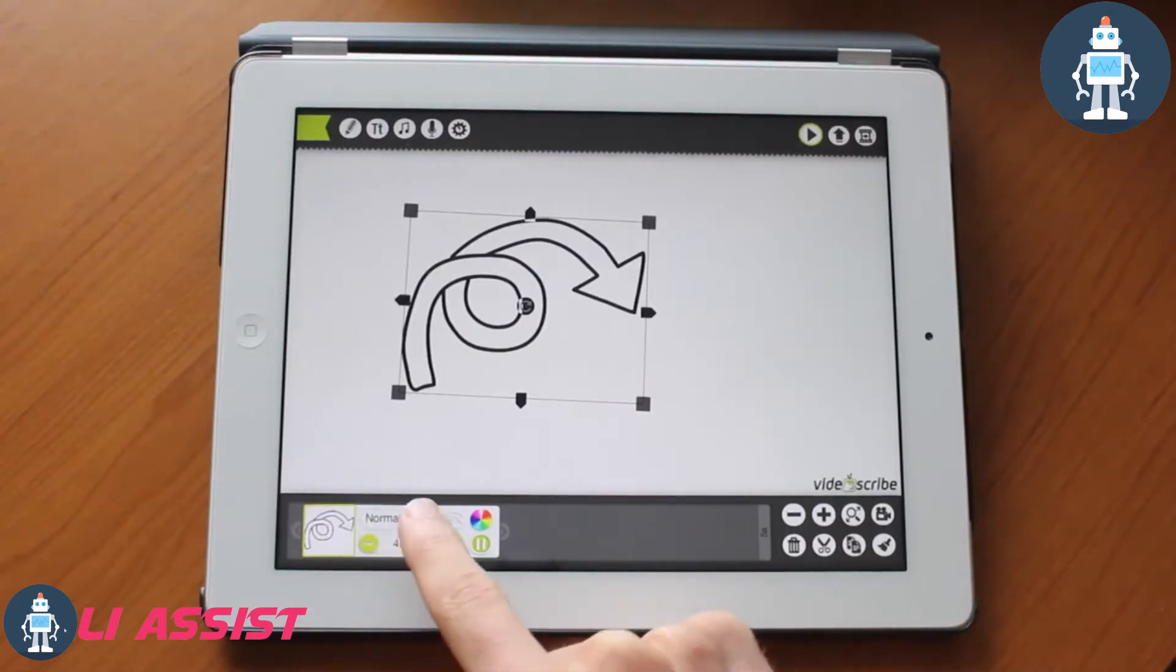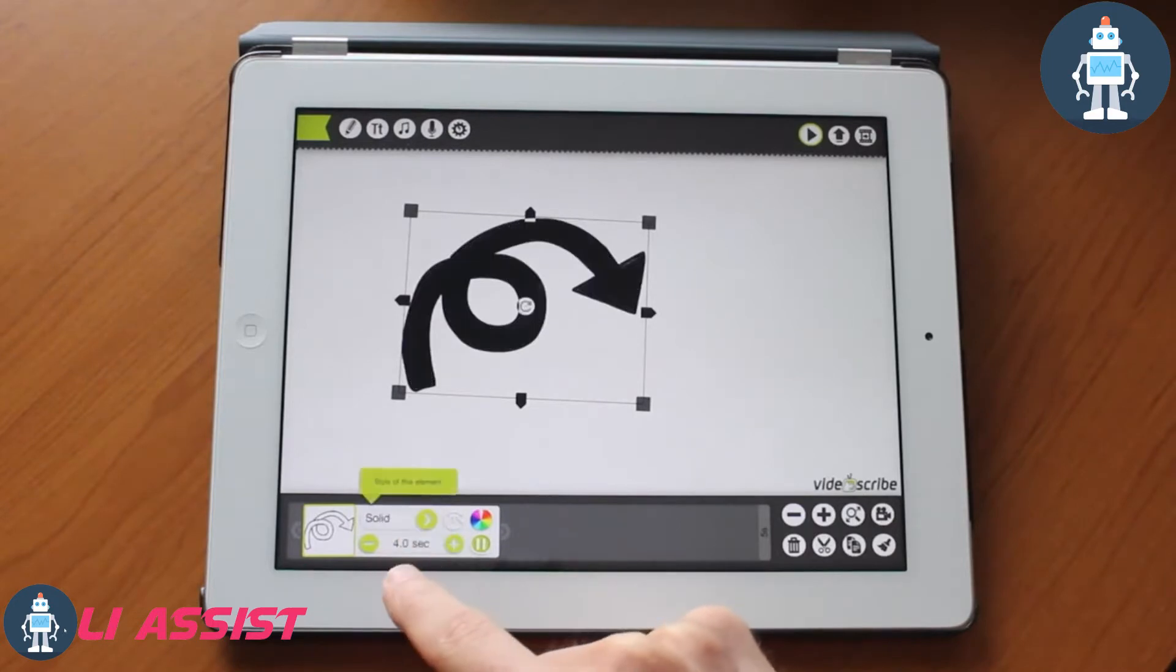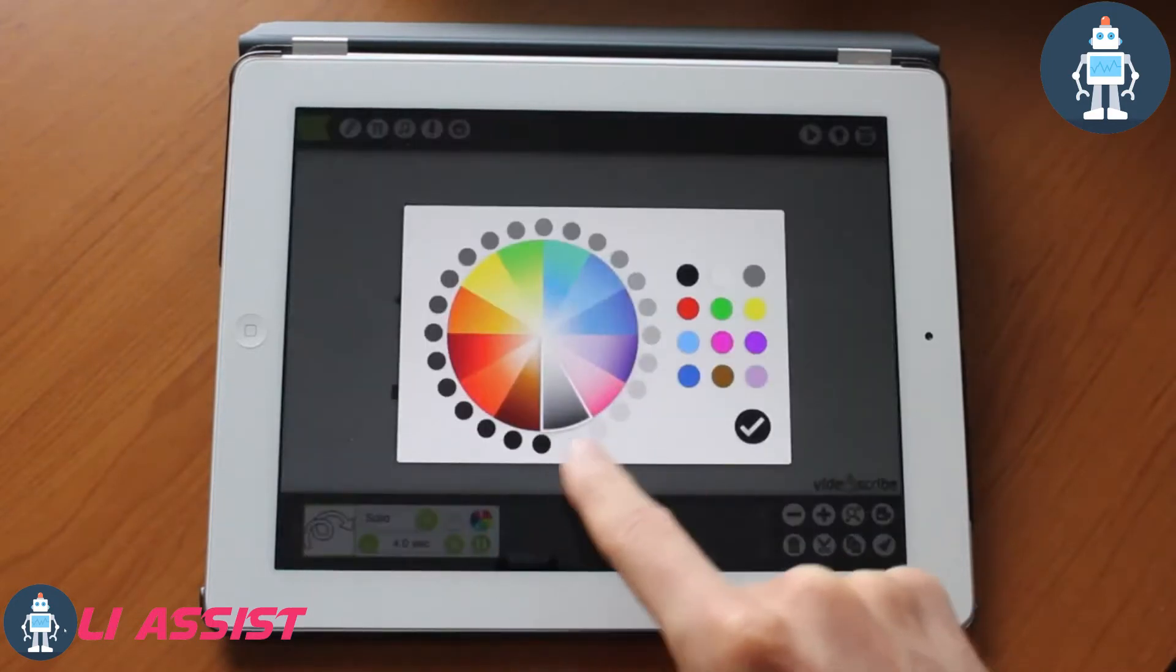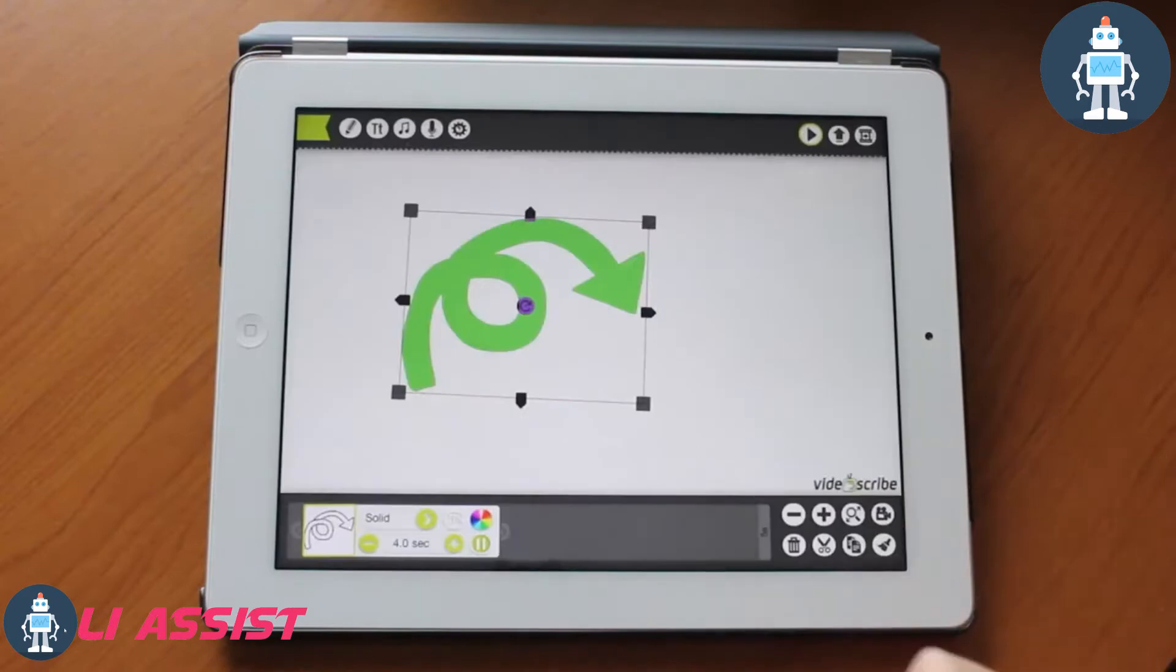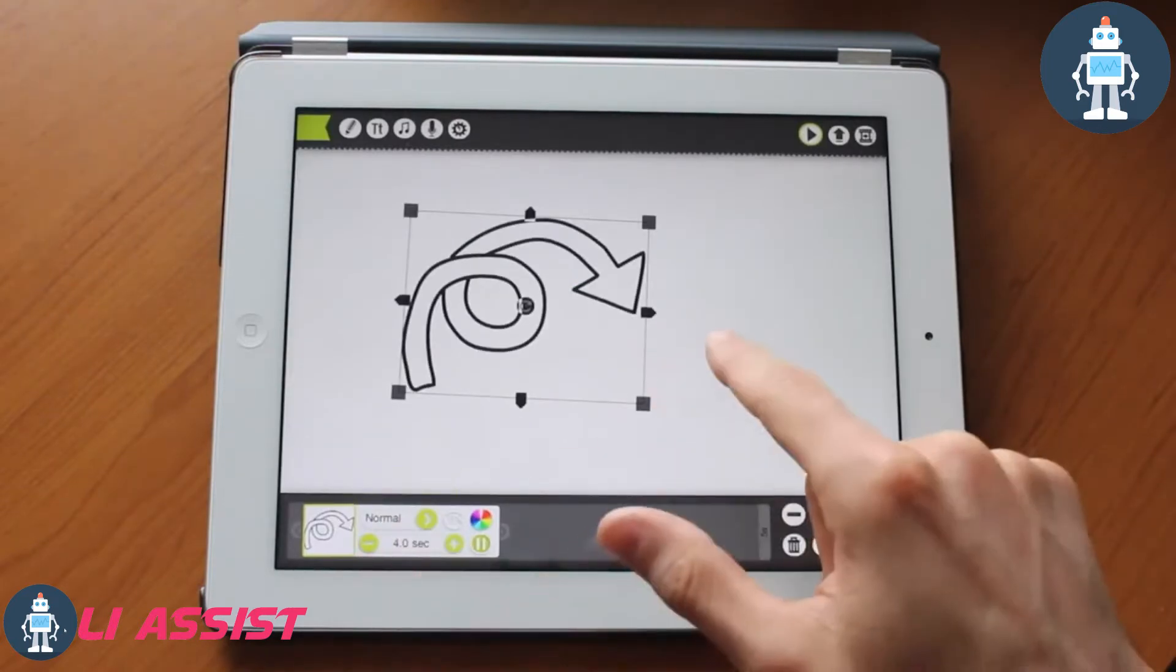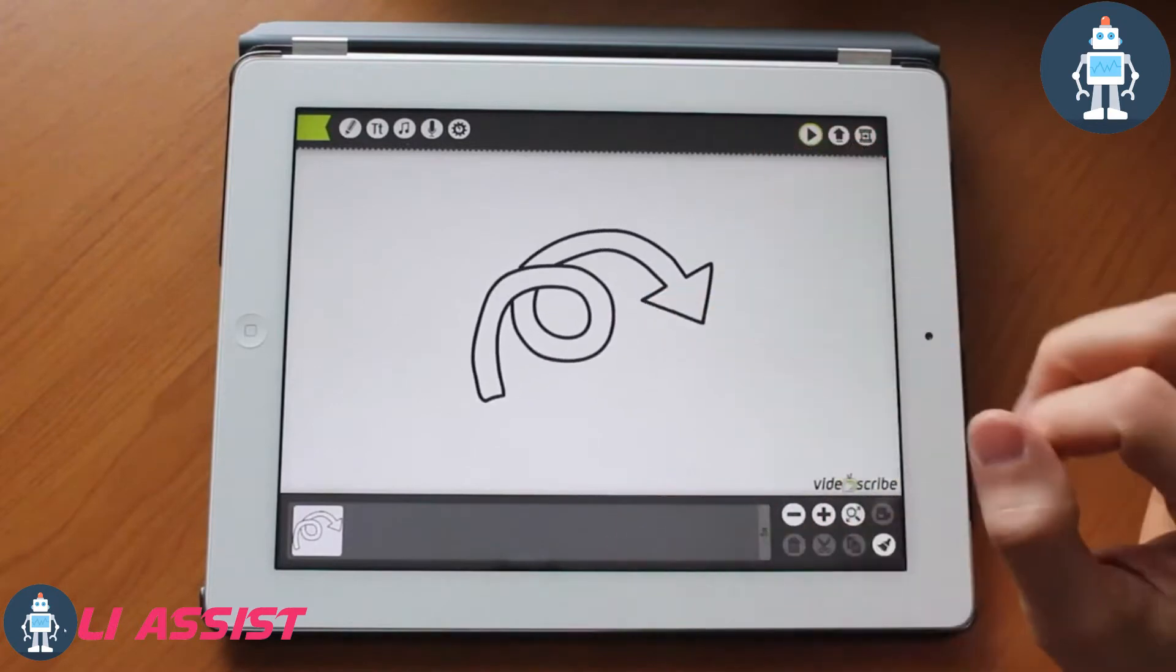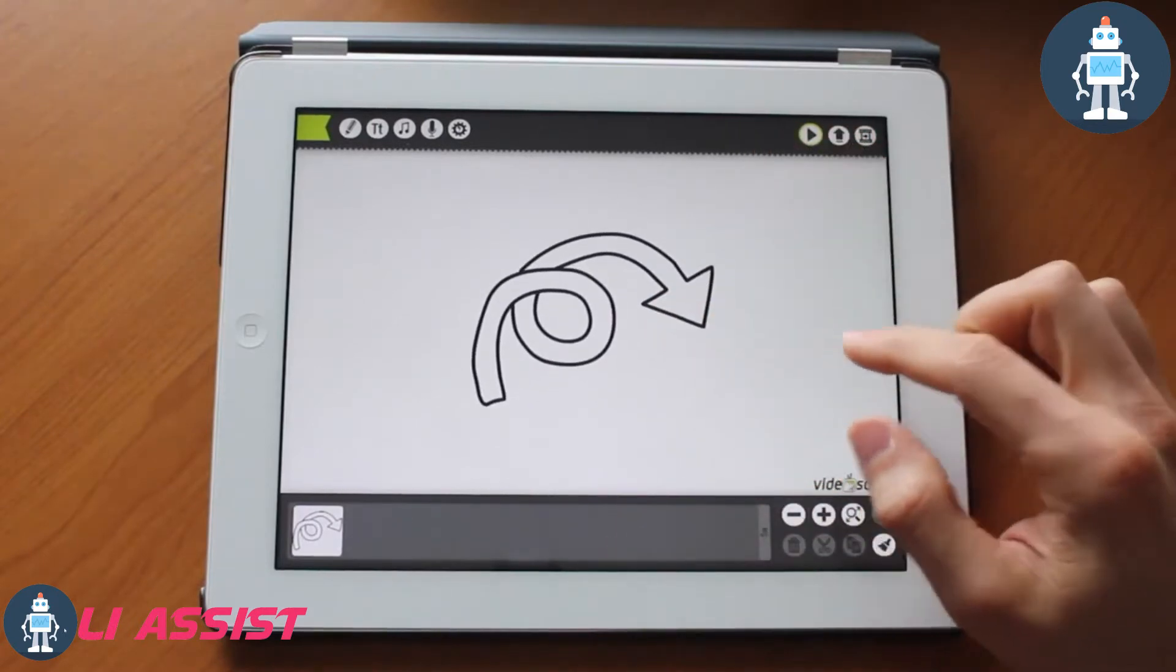You can actually choose a variety of options in terms of how the object looks. So you could actually color it. Let's go ahead and pick out a color, say green, tap the check mark and you have a green arrow. But let's go ahead and stick to the normal one for now. We'll use this arrow in the middle of the screen.